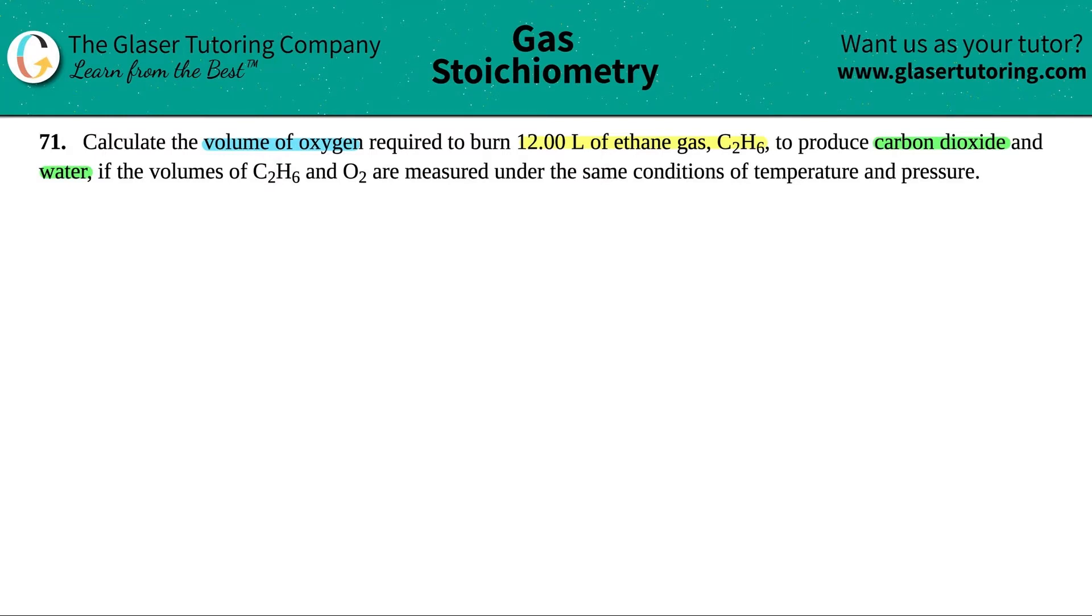Okie dokie. So it seems like here we're looking for the volume of oxygen and they're giving us information about another compound. Whenever this happens, when you're looking for one thing and they're giving you information about another thing, we have to write a balanced equation.